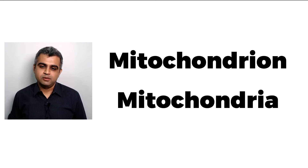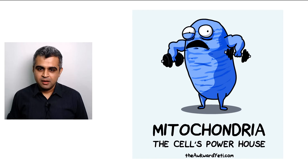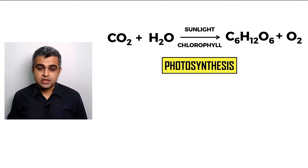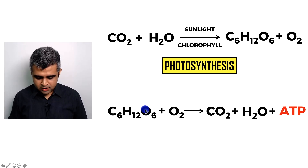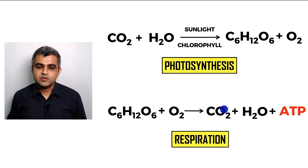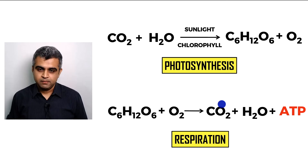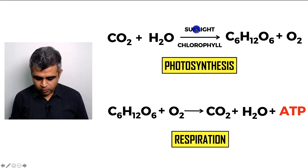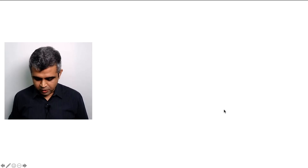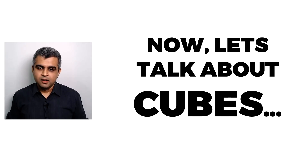Mitochondria is called the powerhouse of the cell. Photosynthesis produces glucose in the chloroplast, whereas the second reaction — glucose combining with oxygen to give carbon dioxide, water, and ATP — is called respiration, and it happens in the mitochondria. So photosynthesis happens in the chloroplast or plastid, while respiration happens in the mitochondria, hence mitochondria is the powerhouse of the cell.